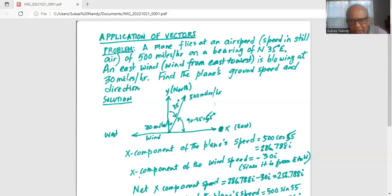Hence, 90 minus 35 equals 55, which is the plane's angle with the x-axis or towards east in the east direction. So 500 cosine of 55 is 286.788i. i is the unit vector in the x direction.